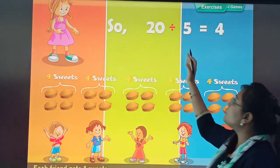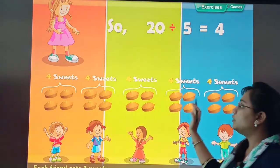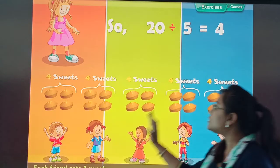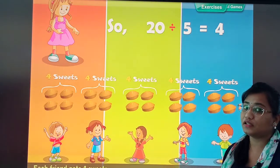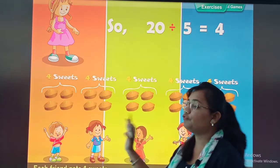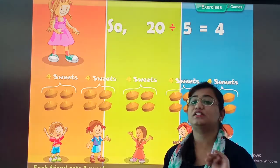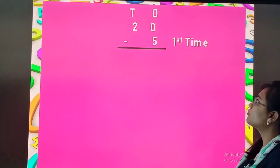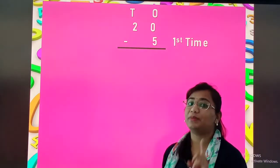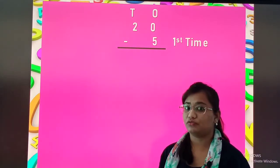So, 20 divided by 5 is equal to 4. 20 sweets ko haam ne 5 friends ke beech mein divide kar diya. So, each friend ko 4 sweets mile. Fine. Now, let's do the repetitive subtraction.